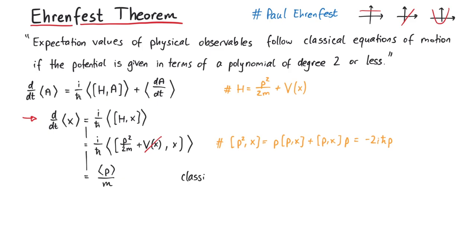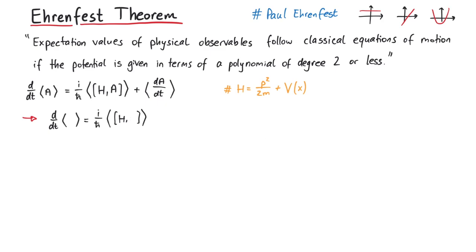This really does look like the classical equation of motion for x. However, in order to use this equation, we also need to know how the expectation value of the momentum operator evolves over time. We perform a similar calculation, but here we have to calculate the commutator of the potential with p.